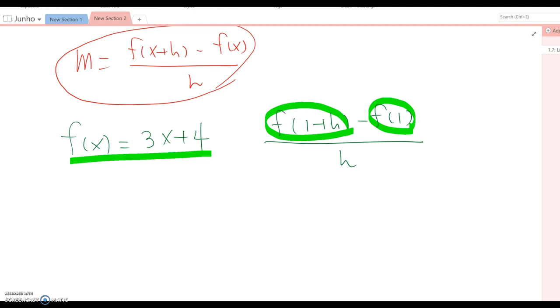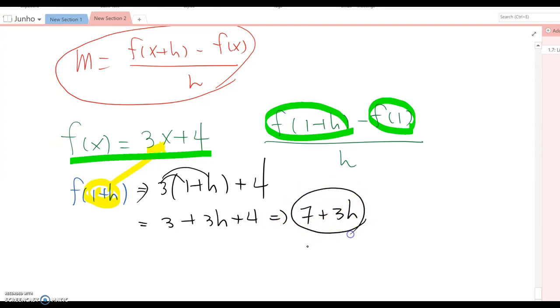Let's find out f(1 plus h) first. It means you are plugging this value into x here. So we can write 3 times (1 plus h) plus 4. So 3 plus 3h plus 4, which is 7 plus 3h. That's f(1 plus h).